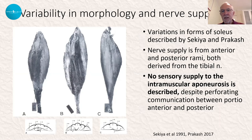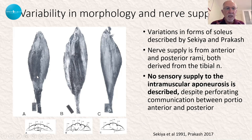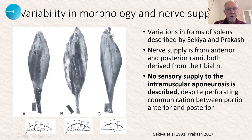There's considerable variability in the actual morphology of soleus, and the variants are as described. This is the work by Sekia, a Japanese anatomist. So this is the normal soleus, where we've got this bipennate anterior structure and the unipennate remainder of soleus.